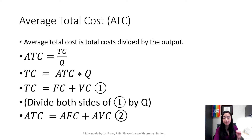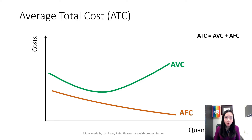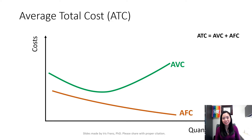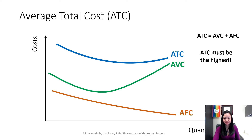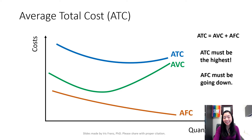Therefore, average total cost is going to be higher than average fixed cost and also higher than average variable cost, because we're all positive numbers here. When putting all three together on a diagram, average total cost is the sum of average variable cost and average fixed cost, so average total cost has to be the highest. Also, average fixed cost has to go down. There is no way you mix up the three curves because ATC has to be the highest and AFC has to be going down.